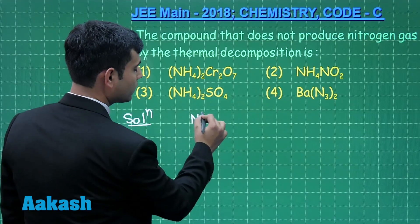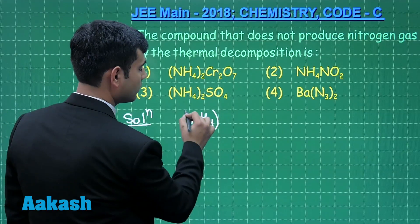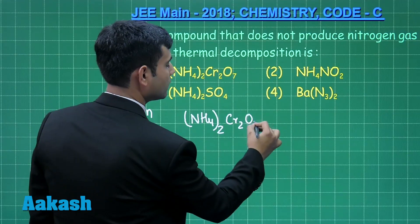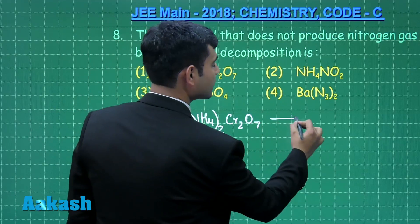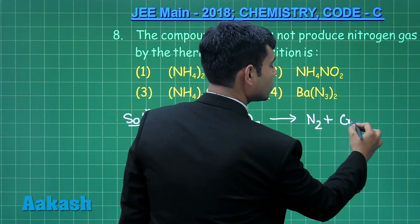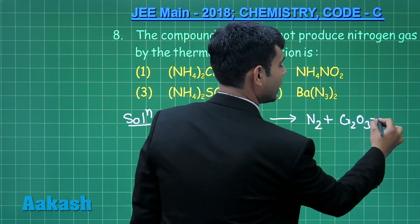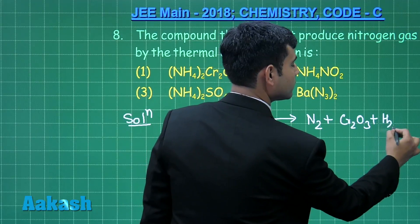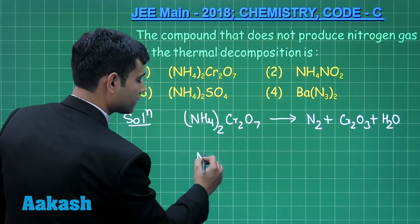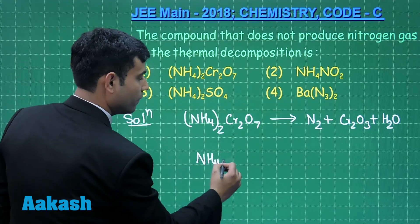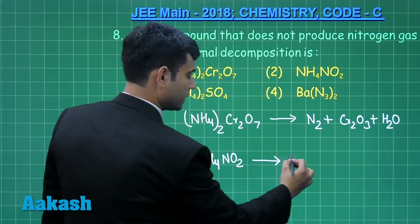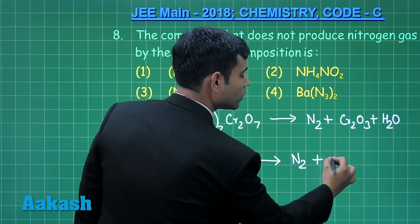When ammonium dichromate is heated, it gives us nitrogen, Cr2O3 and water. Now, the second option is ammonium nitrite. When ammonium nitrite is heated, it gives us N2 and H2O.